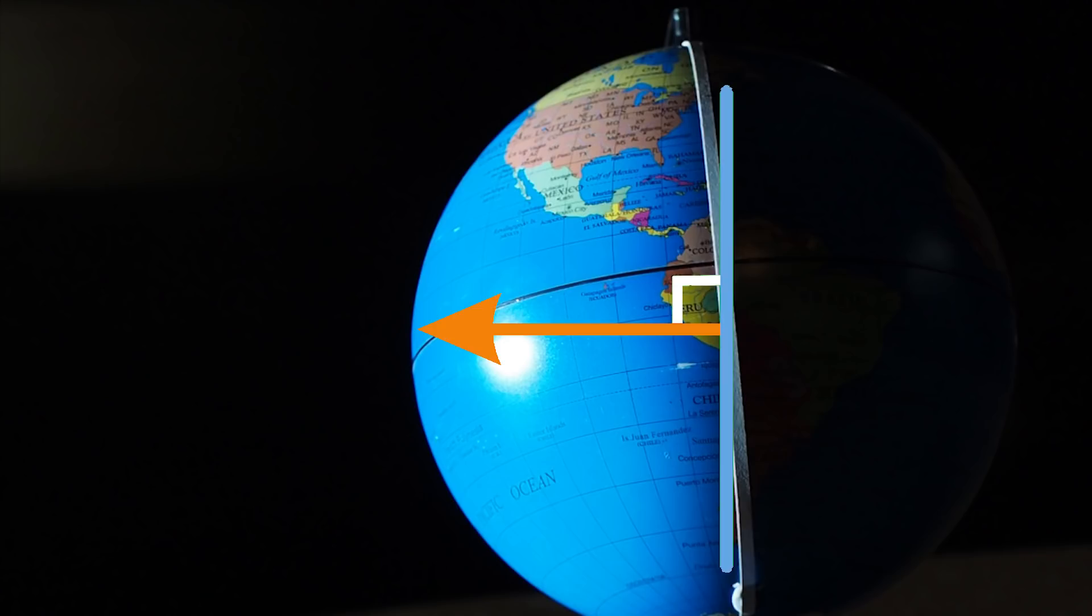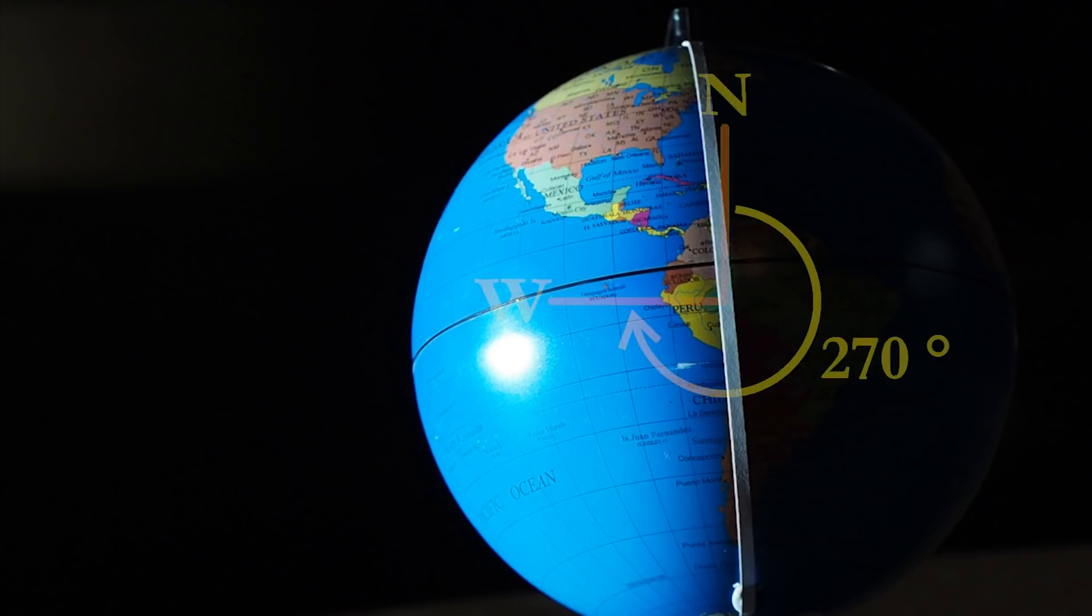Because the Earth's axis is also at 90 degrees to the sun on the equinox, all the north-south lines of longitude are aligned with the terminator. Since west is defined as 270 degrees from north, that means as locations cross the terminator line, the sun has to set due west.